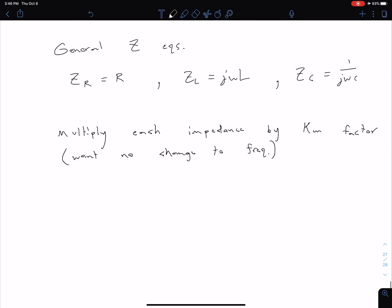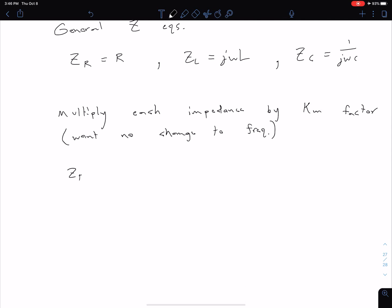Let's consider our three impedances. We have ZR'. Our new impedance is going to be Km times ZR. ZR is just R, so we have KmR. In this case, we don't have any frequency dependence on R, so we don't have to worry about any type of compensation. This is just equal to our R' value.